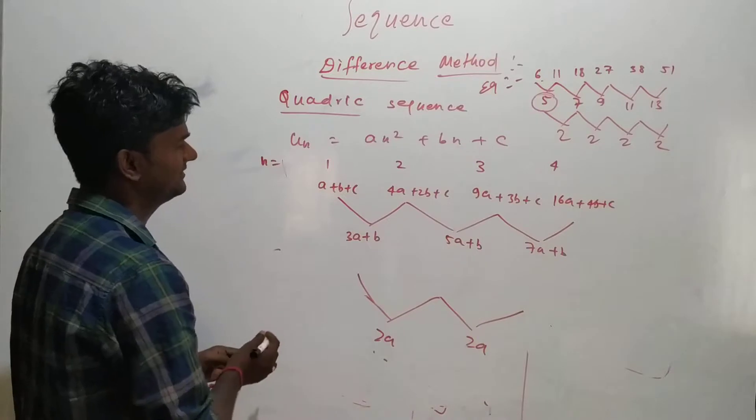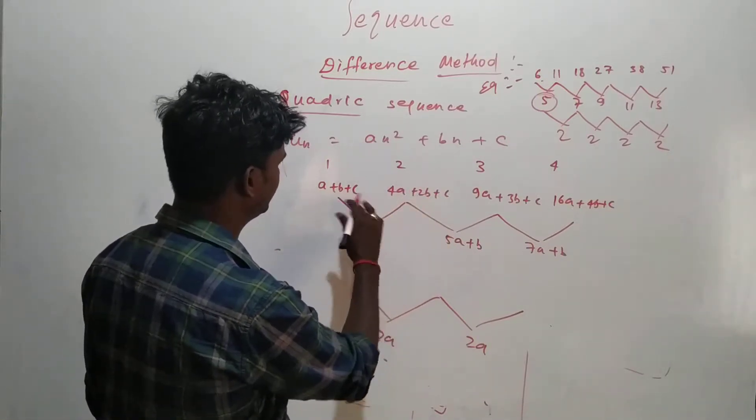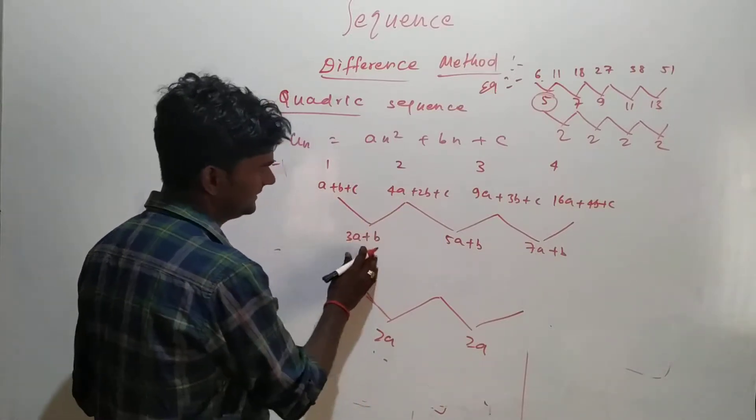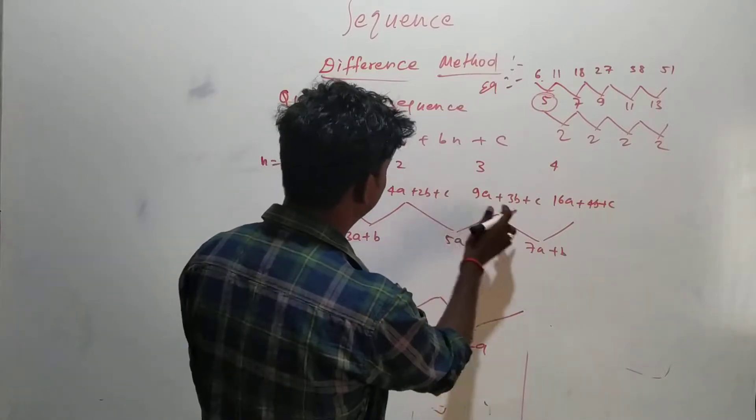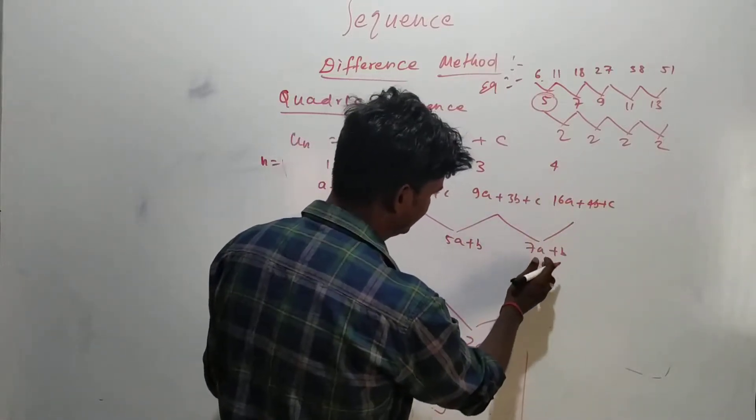So now for the difference method, you have to take the difference between those. So c will be cancelled, 2b minus b is b, and 4a minus a will be 3a. So 3a plus b. If I substitute this you will be getting 5a plus b, and if you substitute this you will be getting 7a plus b.